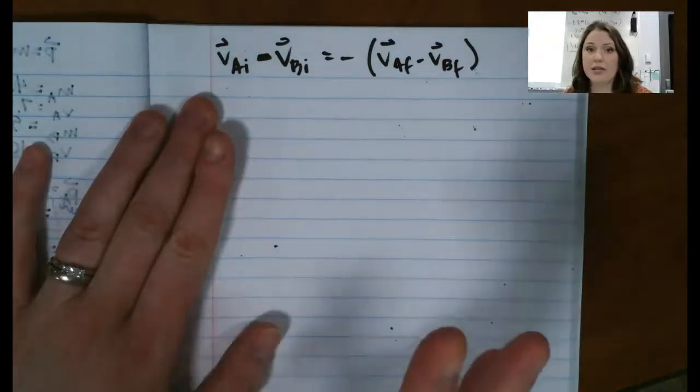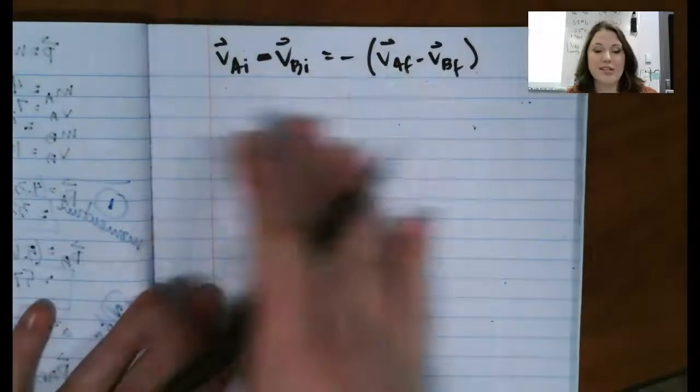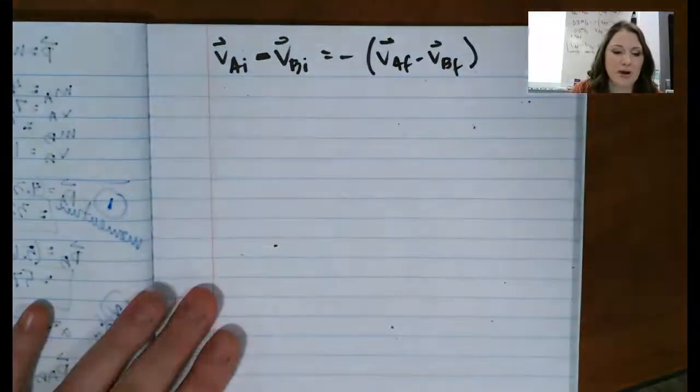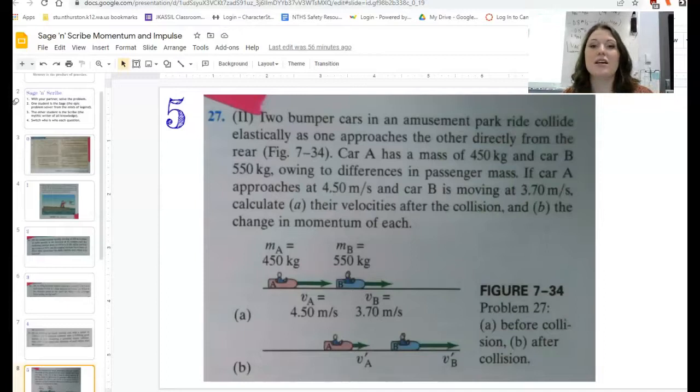And that comes from the conservation of momentum and the conservation of kinetic energy. So what I'm going to do now is I'm going to use this equation along with this story problem to figure out how fast these two bumper cars are going after the collision. So, two bumper cars in an amusement park ride collide elastically as one approaches the other directly from the rear. Car A has a mass of 450 kilograms.